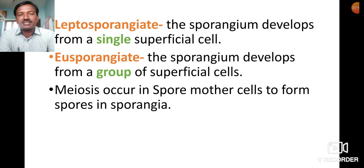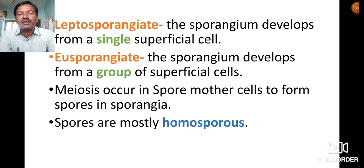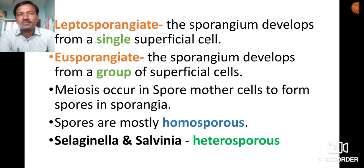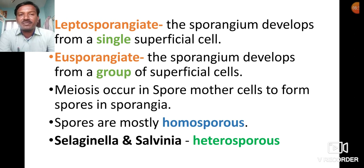Meiosis occurs in sporangia. Spore mother cells undergo meiosis to form haploid spores. Mostly in pteridophytes, spores are homospores, meaning the spores are similar. But in some plants like Selaginella and Salvinia, spores are different — those are called heterospores.